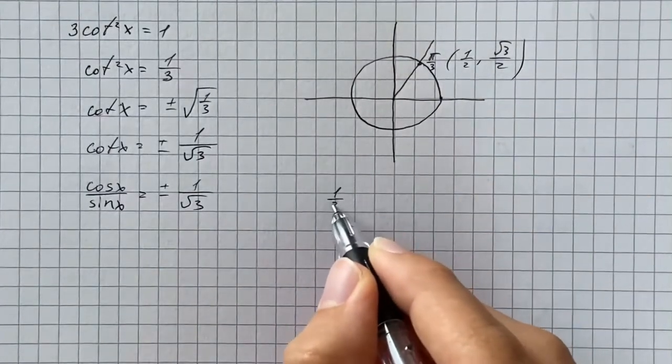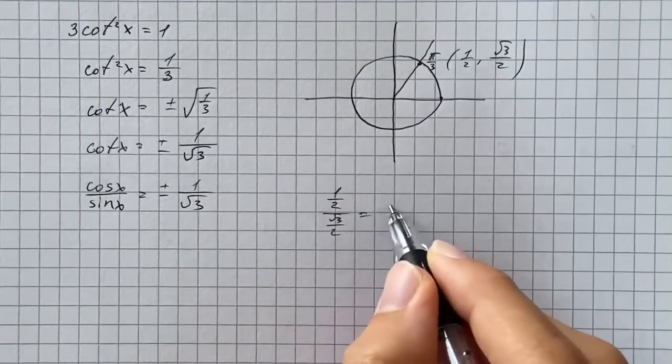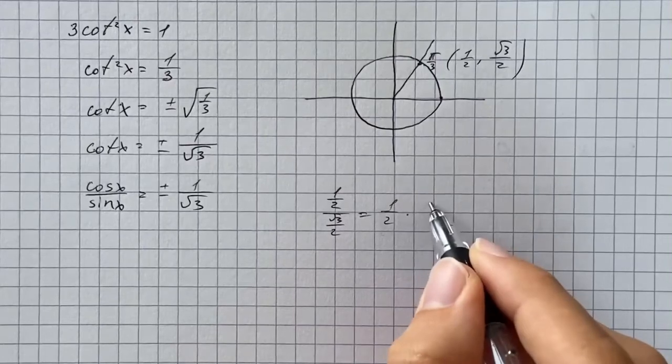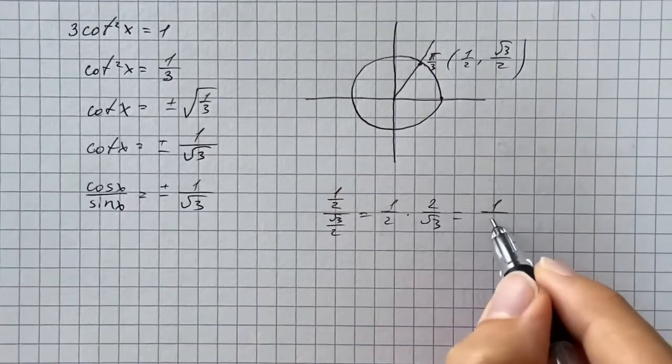So we make a ratio, then we're going to flip and multiply, so it's going to be 1 half times 2 over square root of 3. So we cancel out 2 and get 1 over square root of 3.